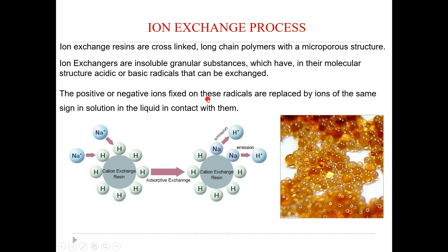Acidic and basic radicals are present in the structure, and these can be exchanged. Positive and negative ions are fixed on the radicals and are replaced by ions of the same charge. For example, in a cation exchange resin, H+ ions are present and they can be exchanged for other positive ions — one positive ion is exchanged for another positive ion.